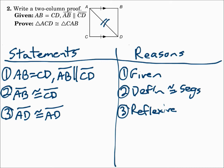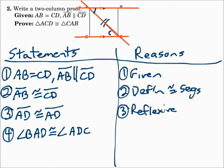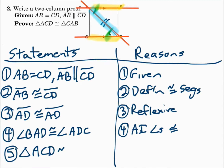Now we have two pairs of congruent sides. Since segment AB is parallel to segment CD, and when parallel lines are cut by a transversal we have alternate interior angles that are congruent, angle BAC is congruent to angle ACD because alternate interior angles are congruent. Now I have a pair of sides, a pair of angles, and a pair of sides — notice the angle is between the sides. That's enough to say the triangles are congruent: triangle ACD is congruent to triangle CAB by SAS.